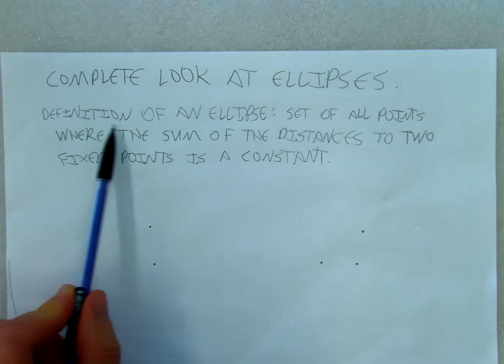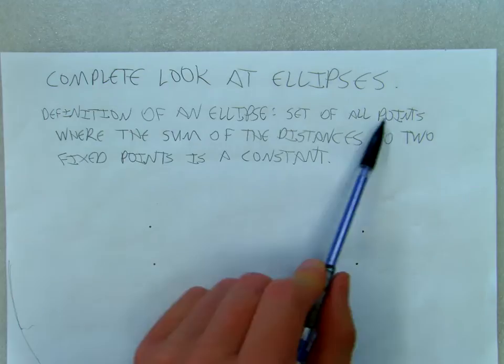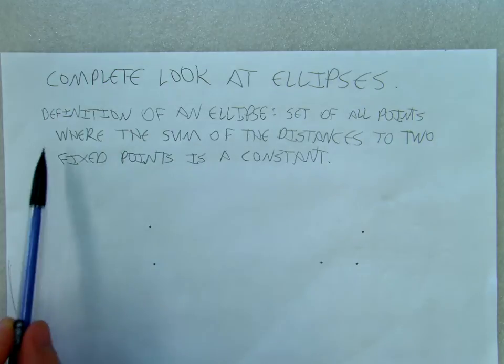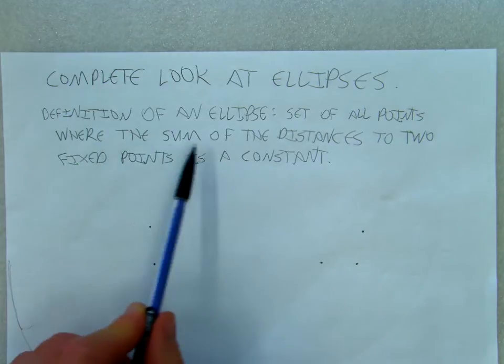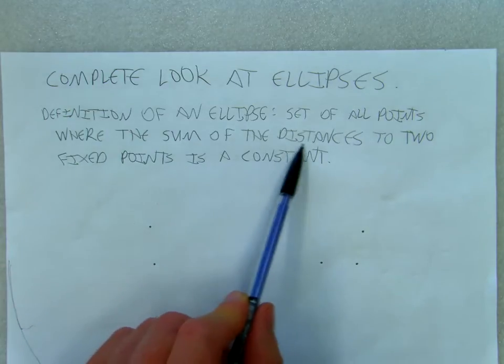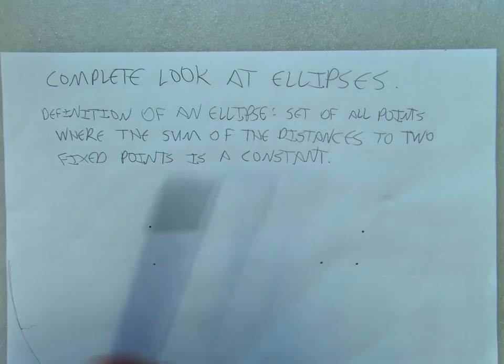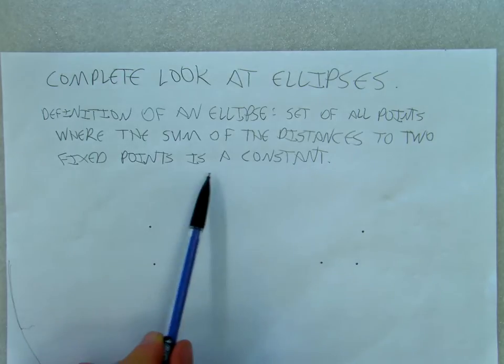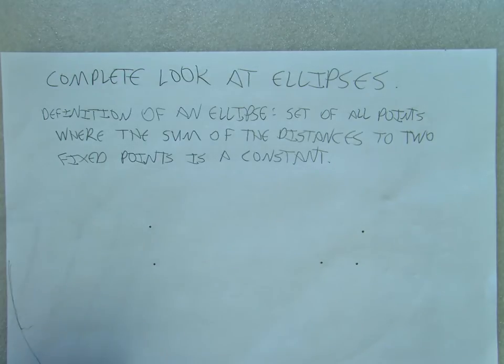The definition of an ellipse is the set of all points where the sum of the distances to two fixed points is a constant.